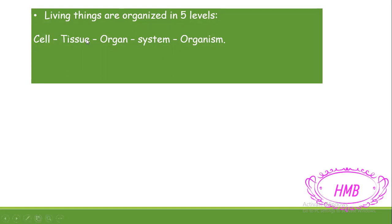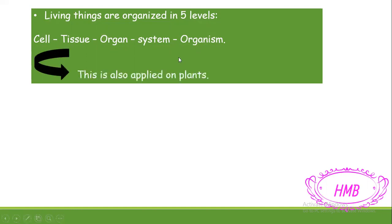Those five levels are: cell, tissue, organ, system, and finally organism, which is the living thing. This is also applied for plants.